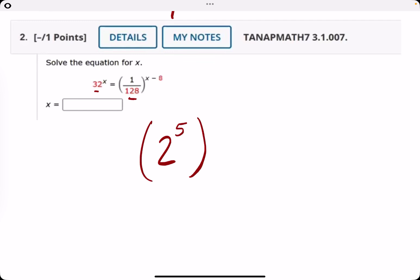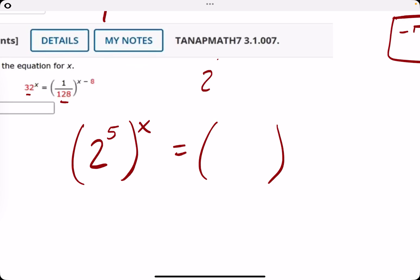2 to the 5th is 32. So we have 32 to the x or 2 to the 5th to the x equals...